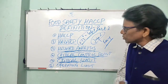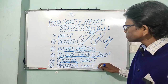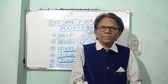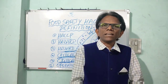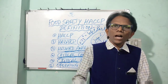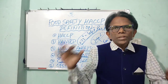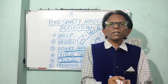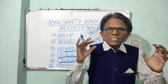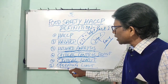What is an operating limit? An operating limit is a criterion that is more stringent than a critical limit. Operating limits are established by an operator to prevent the occurrence of deviations.